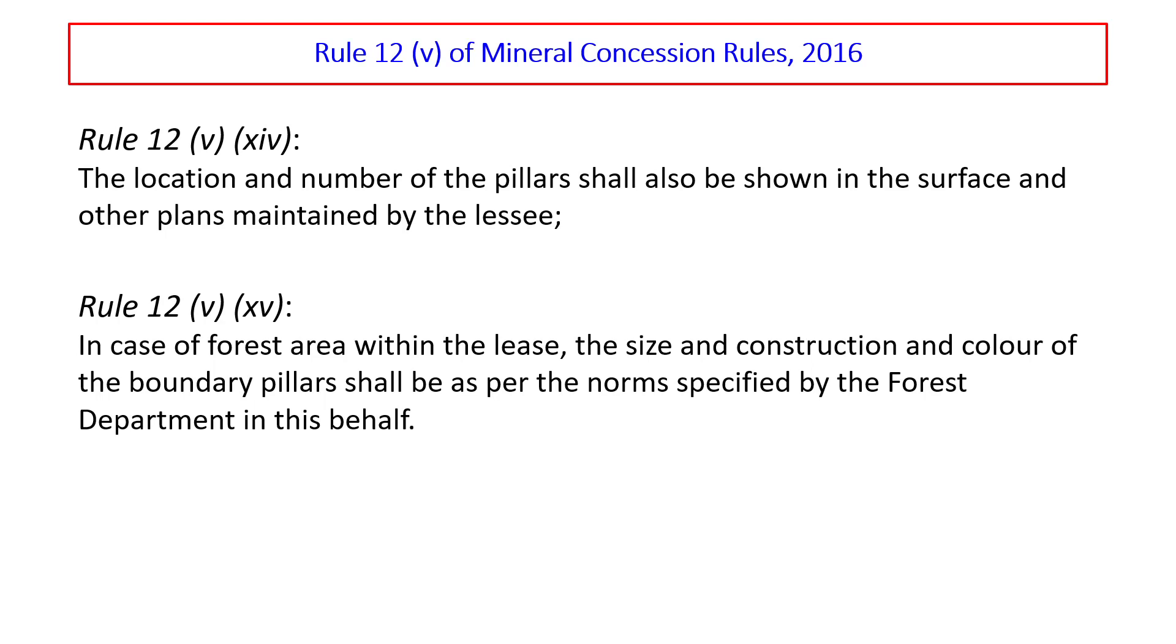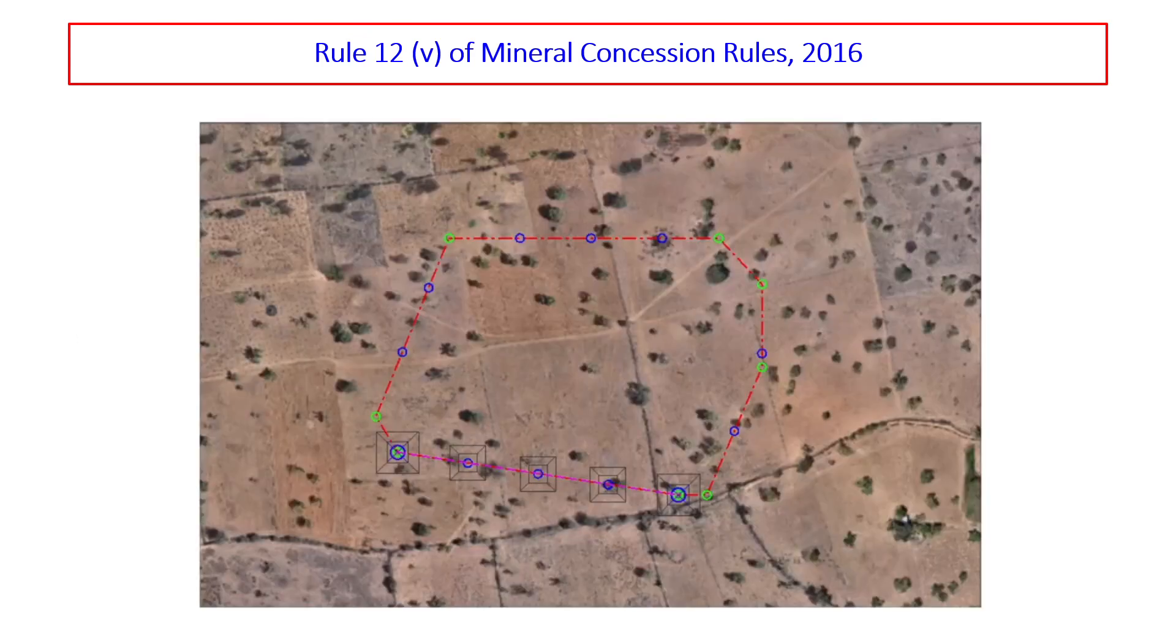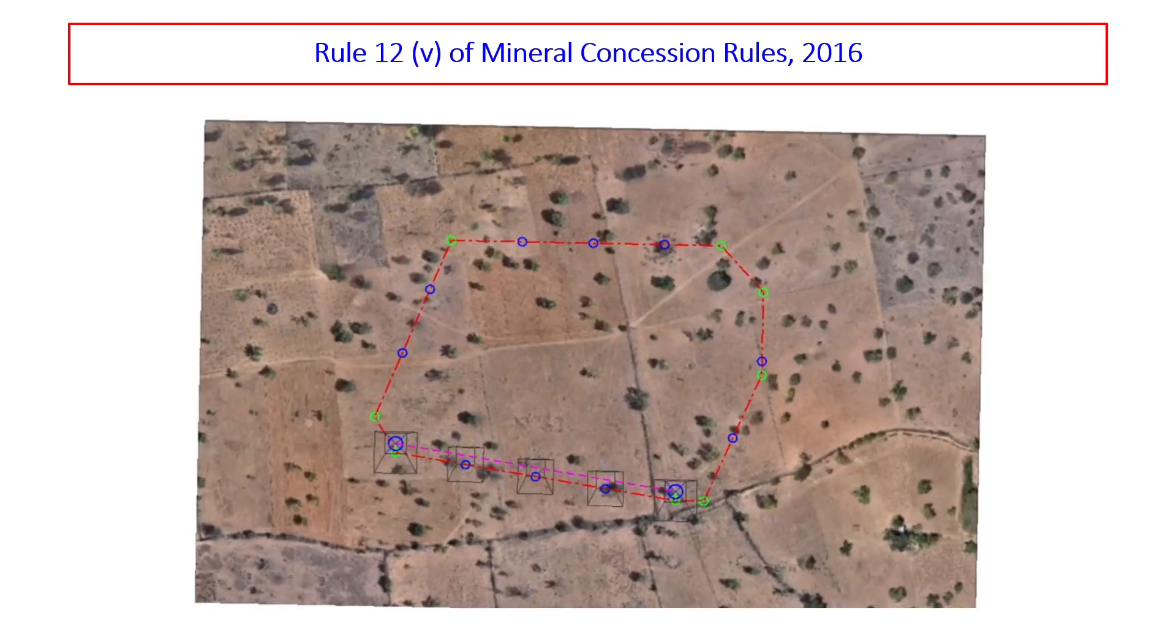The location and number of the pillars shall also be shown in the surface and other plants maintained by the lessee. In case of forest area within the lease, the size and construction and color of the boundary pillars shall be as per the norms specified by the forest department in this behalf.